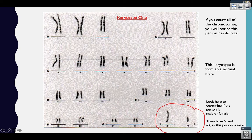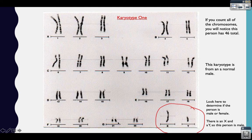If you count each chromosome, you can do them individually or count by twos since they're paired: 2, 4, 6, 8, 10, 12, 14, 16, 18, 20, 22, 24, 26, 28, 30, 32, 34, 36, 38, 40, 42, 44, 45, 46. This person has a total of 46 chromosomes, so at least with regard to chromosome number, they are normal. We would say this karyotype is from a normal male with 46 chromosomes.